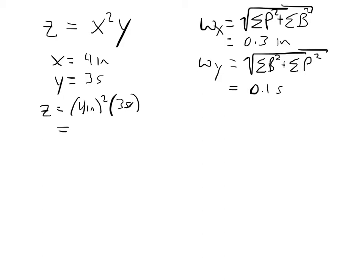Which, if I can do my math right in my head, 48, so 48 inches squared times seconds, whatever this happens to be. We're just making this up. But now we want to know, what is the uncertainty in z? Well, that uncertainty depends on the uncertainties of x and y. And in order to do that, we need to do the root sum square method.